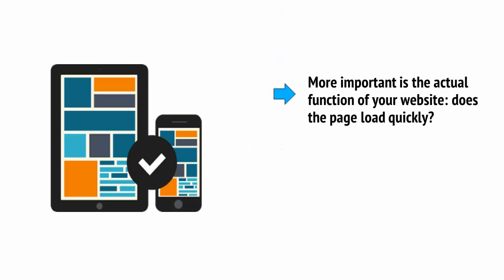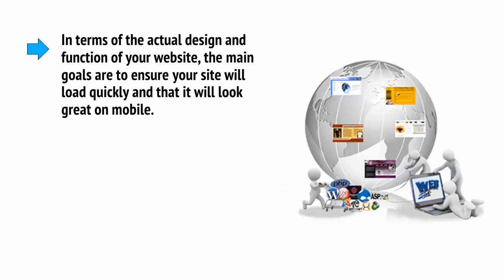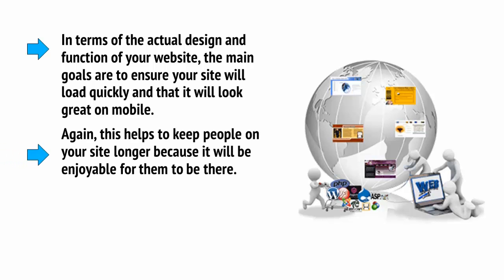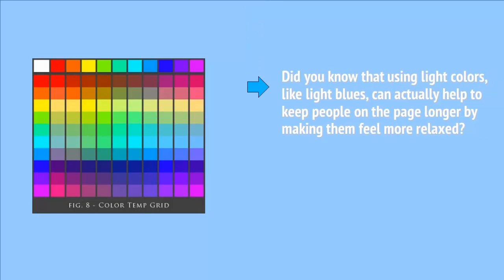The next element of on-page optimisation is the site design itself. Using breadcrumbs, for instance, can help a lot, as can using alt tags for your images so Google knows what they are. More important is the actual function of your website: does the page load quickly, and is it mobile-friendly? Mobile-friendliness in particular is something you absolutely cannot ignore today. The main goals are to ensure your site loads quickly and looks great on mobile. This helps keep people on your site longer because it will be enjoyable for them to be there. Avoid using too many plugins, which will slow you down, and try not to inundate your visitors with adverts and pop-overs. Using light colours like light blues can actually help keep people on the page longer by making them feel more relaxed.